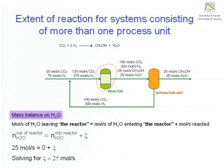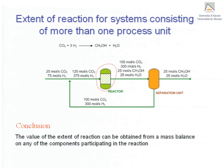A material balance on water over the reactor gives the exact same result. In summary, the value of the extent of reaction can be obtained from a material balance over the reactor on any of the components participating in the reaction. We do the material balance on that component using the information available. It does not matter whether the balance is done on a reactant or a product; the only requirement is to take into account the reaction stoichiometry.